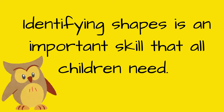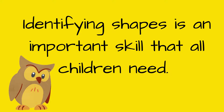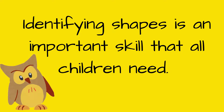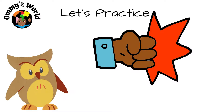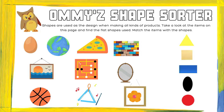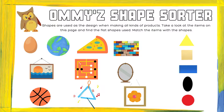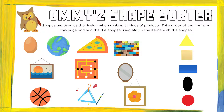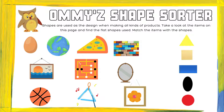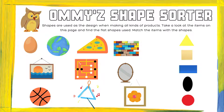Identifying shapes is an important skill that all children need — it's part of our common core. So let's practice. We're going to use Ami's Shape Sorter. Shapes are used in the design of all kinds of products. Take a look at the items on this page, find the flat shapes that are used, and match the items with the shapes on the right-hand side.